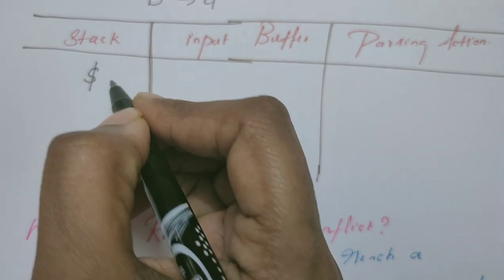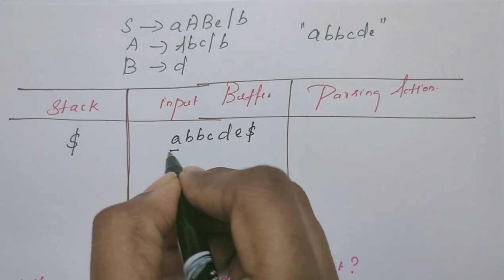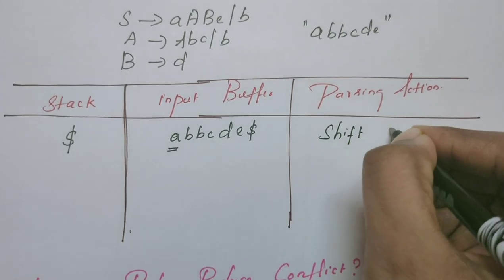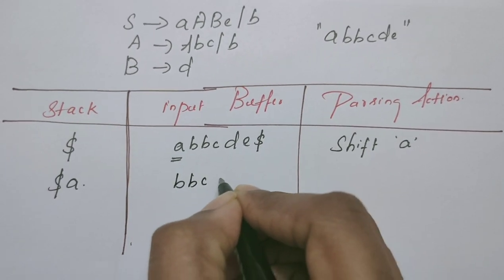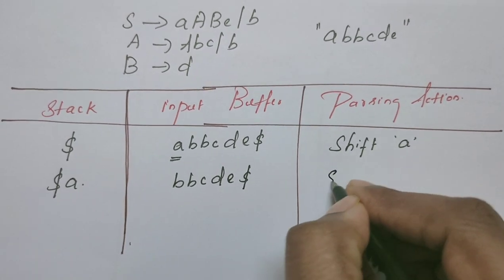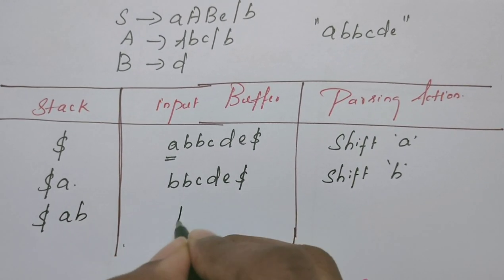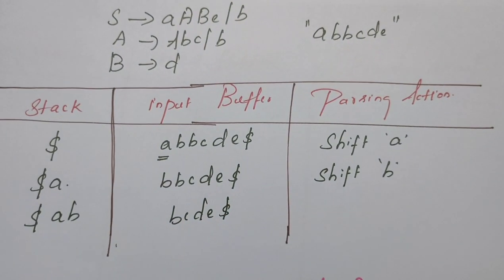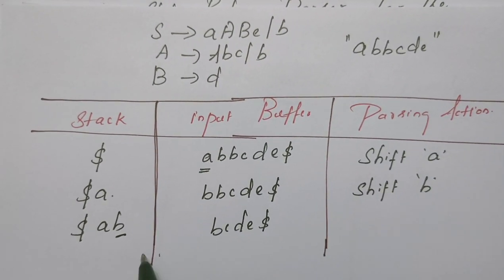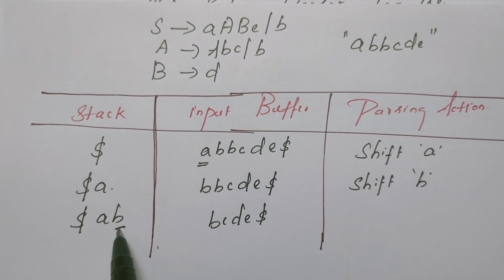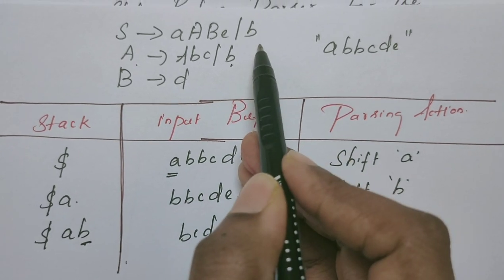The first symbol is to be shifted onto the stack — shift A. Now the input buffer contains B, B, C, D, E, dollar. Next, shift B as well. Now the stack contains A, B. Looking into the grammar, whether this B can be reduced or we have to shift the next symbol is one question. And if we decide to reduce B, should B be reduced to A or to S? That is the conflict.